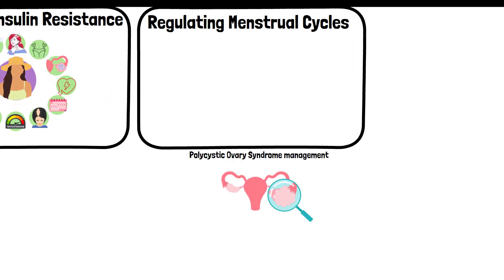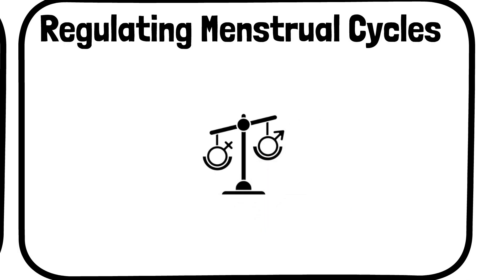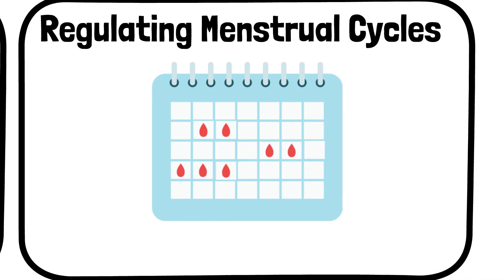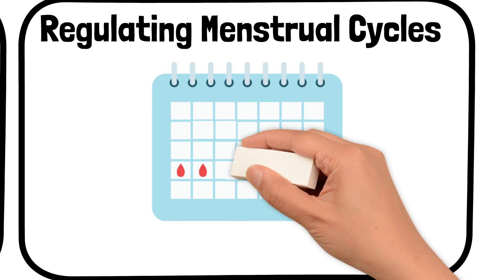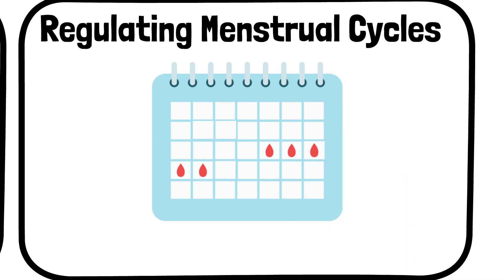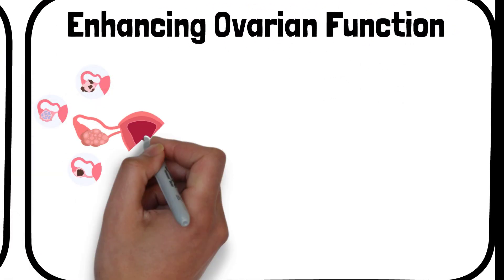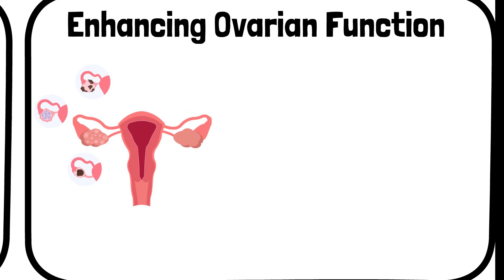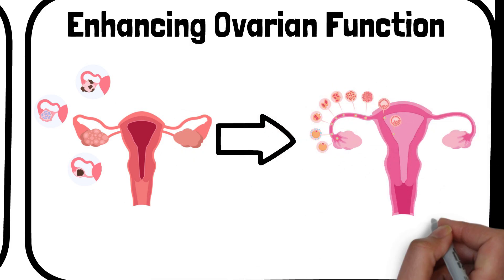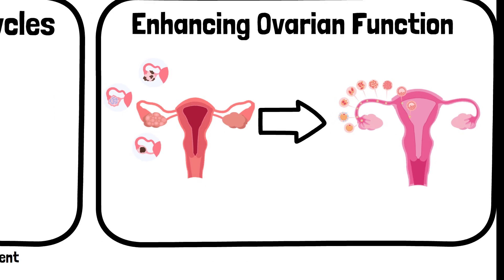Women with PCOS often experience irregular menstrual cycles due to hormonal imbalances. Inositol helps in normalizing these cycles by improving the body's hormonal responses. Regular menstrual cycles are crucial for the overall reproductive health of women with PCOS. PCOS can also lead to dysfunction in ovarian activities like ovulation, and supplementation with inositol has been found to improve ovarian function, including the quality of egg cells, which is essential for fertility and can increase the chances of conception.